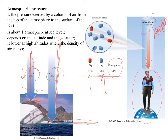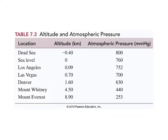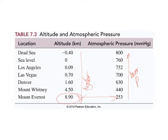That factors into things like cooking or baking. If you've ever looked at the back of a brownie mix box, there are high-altitude instructions for baking. The higher you go in altitude — like up to the top of Mount Everest — the lower the pressure. Mount Everest at 8.9 kilometers has the lowest pressure in millimeters mercury. And vice versa, the Dead Sea, which is below sea level, has very low altitude and a very high pressure.